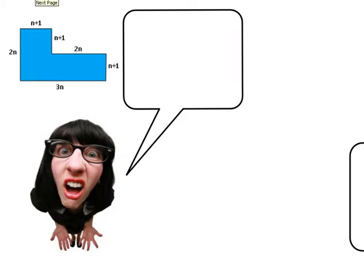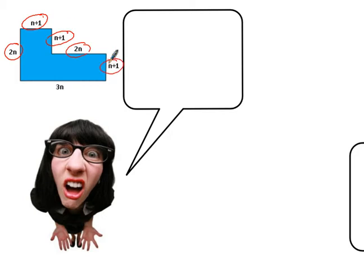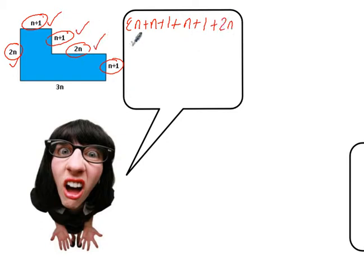OK, Miss Whitehead, I think I can do this one on my own. What I think you do is you say: n plus 1, plus 2n, plus n plus 1, plus 2n plus 1, which gives you 2n plus n plus 1 — that one and that one — plus n plus 1, which is that one, plus 2n, which is that one, plus n plus 1, which is that one.